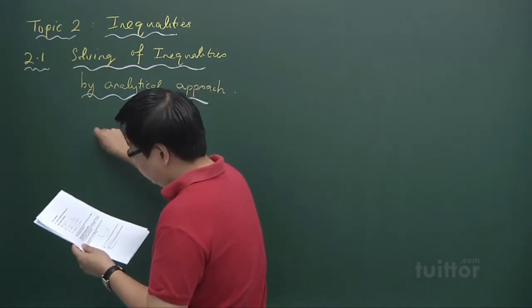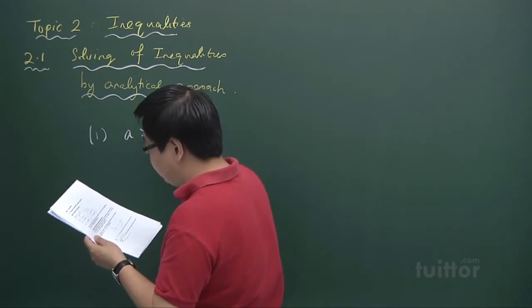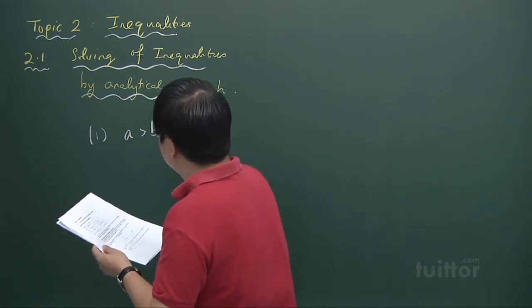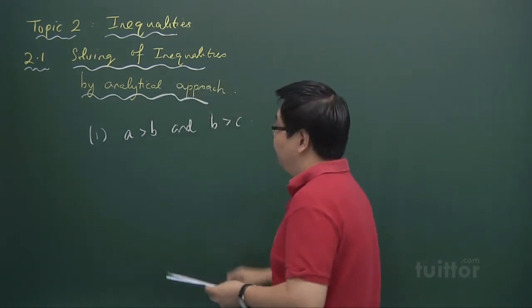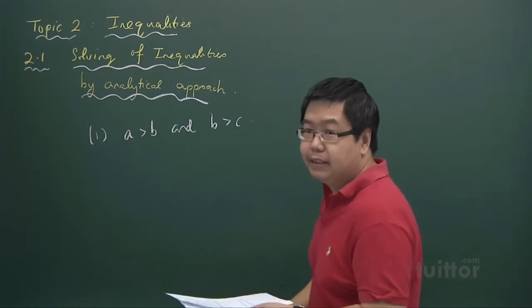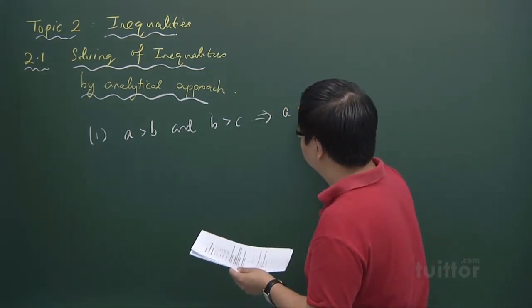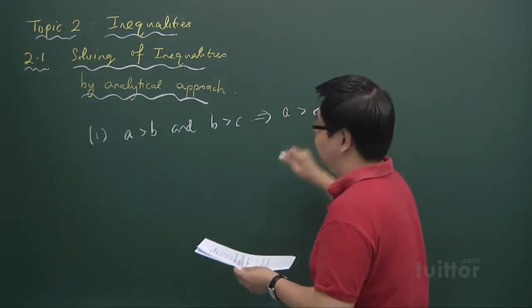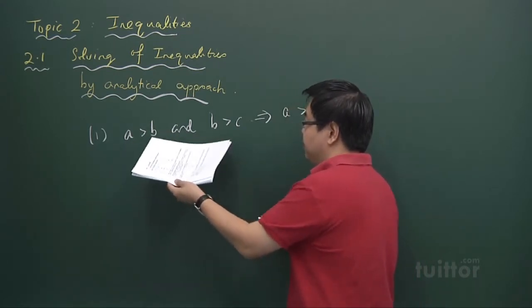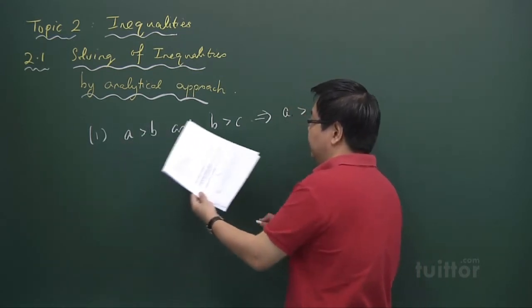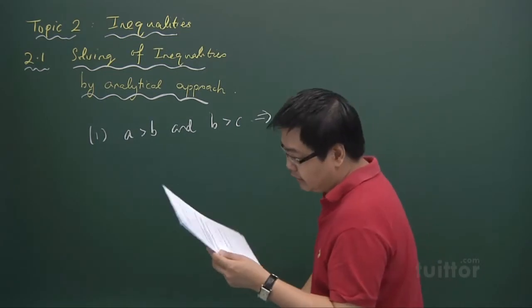The first property, given in the handout, says that if A is greater than B and B is greater than C — where A, B, and C are real numbers — then A is greater than C. So naturally, if A is greater than B and B is greater than C, A will be greater than C. That is the first property of inequalities.